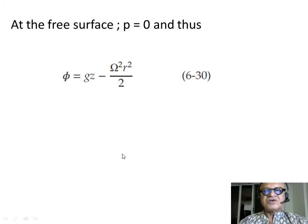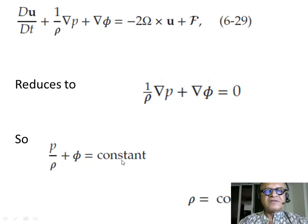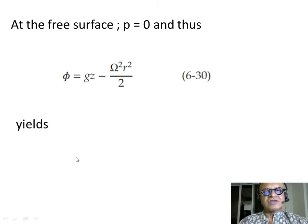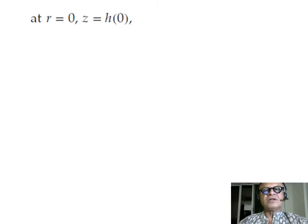At the surface, P is zero, so P over rho plus phi equals constant just becomes phi equals constant. What does it give us?